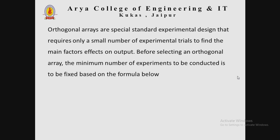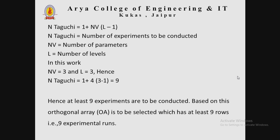Orthogonal arrays are special standard experimental designs that require only a small number of experimental trials to find the main factor effect on output. Before selecting an orthogonal array, the minimum number of experiments to be conducted is fixed based on the formula: N_Taguchi = 1 + NV × (L − 1).